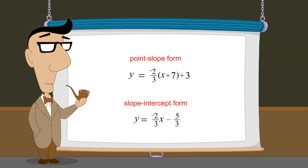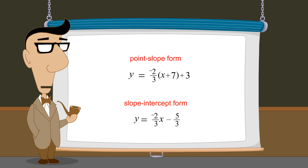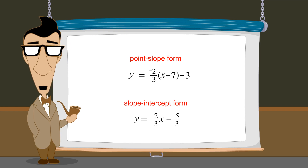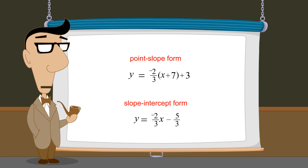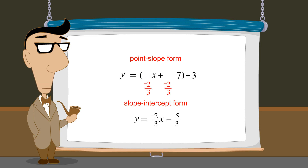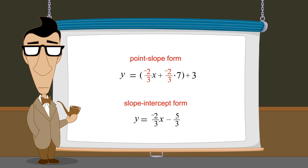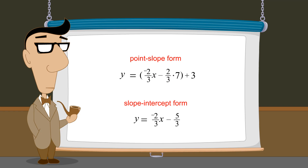Both of these forms are equivalent ways to write the equation for the same line. We can prove this by converting the top equation to the bottom equation's form. We do this by distributing negative two-thirds to the two terms inside the parentheses. Instead of adding negative two-thirds, we can simply subtract two-thirds.